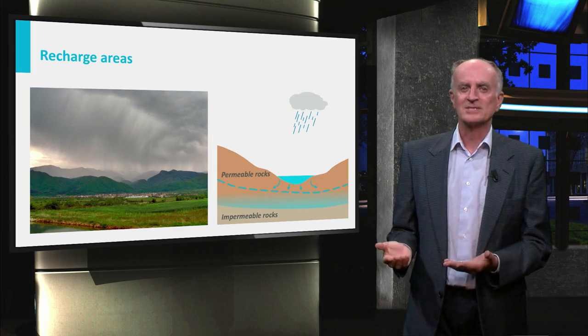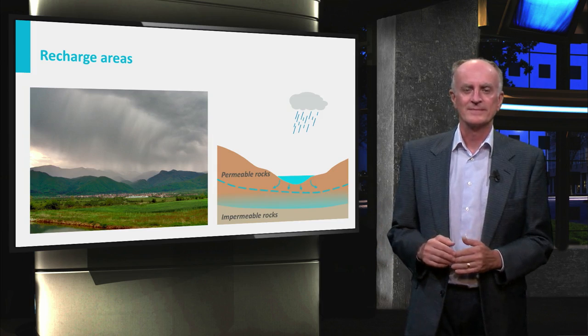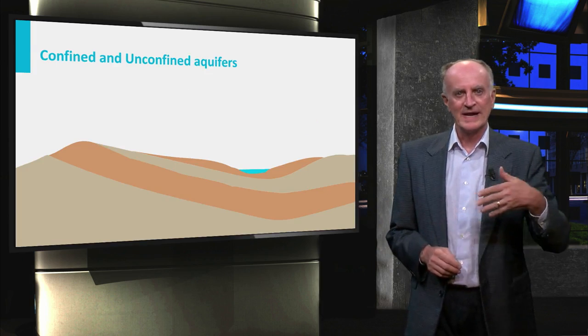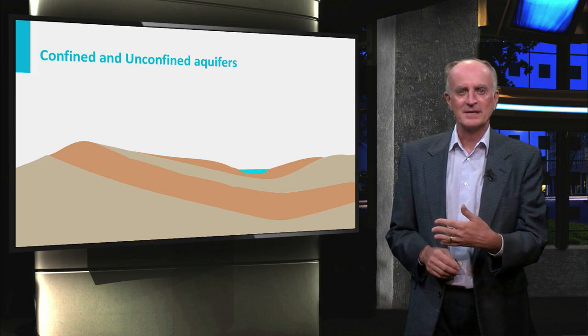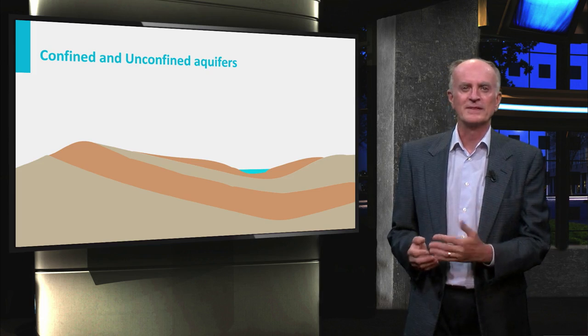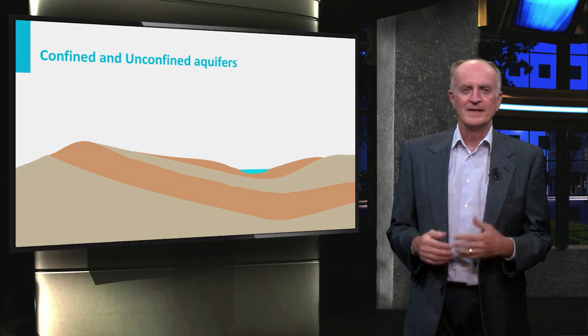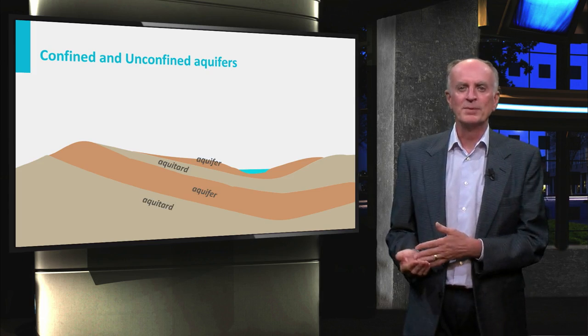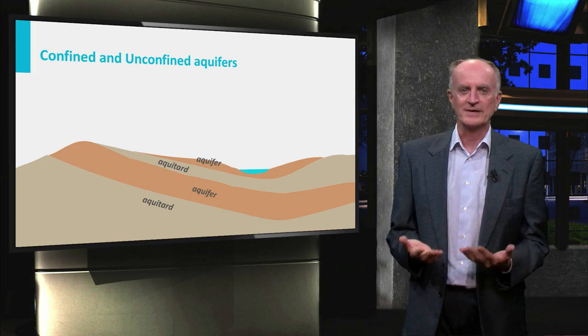We will see at a later stage how this is possible. The water infiltrating the underground in the recharge areas will enter high permeability layers, partly or fully saturating them with water. These layers are called aquifers and they contrast with low permeability layers called aquitards.